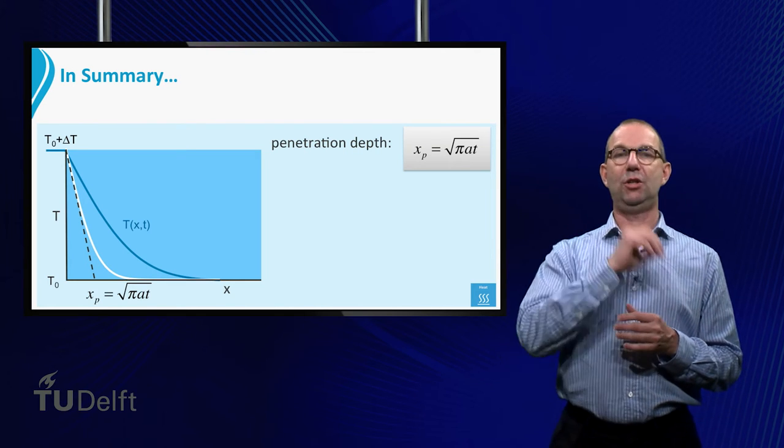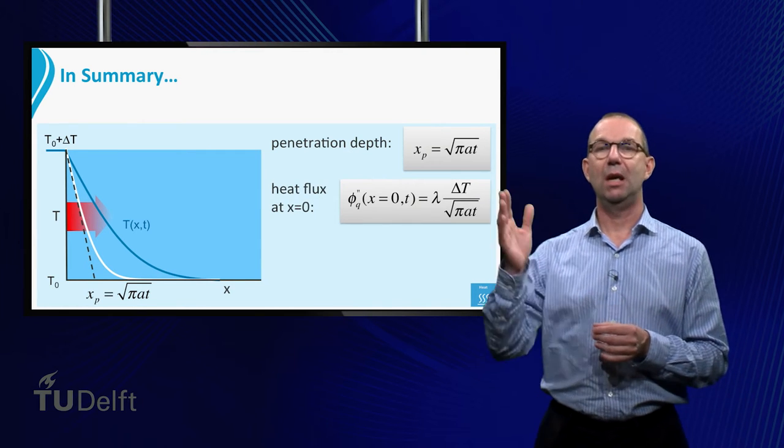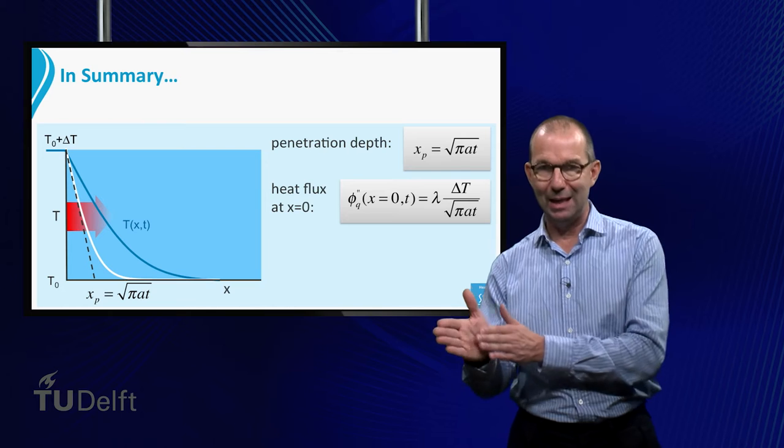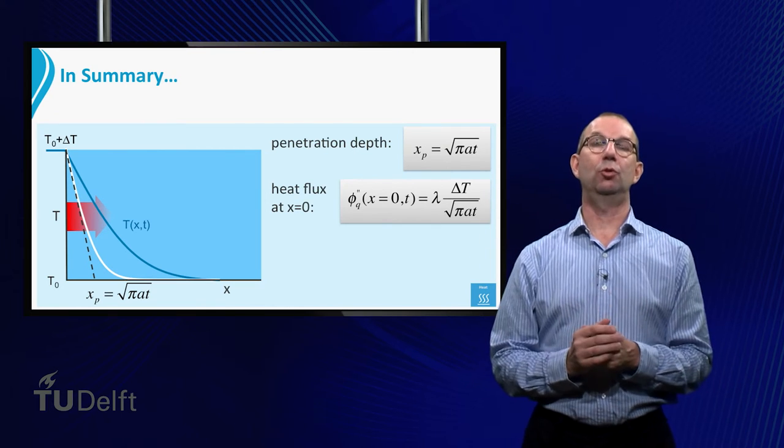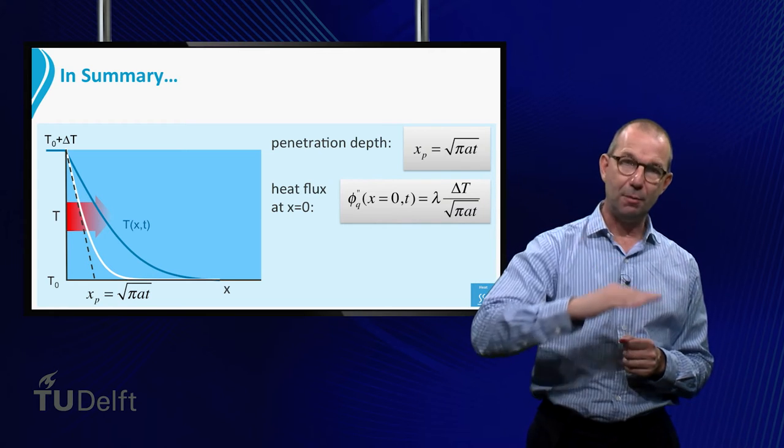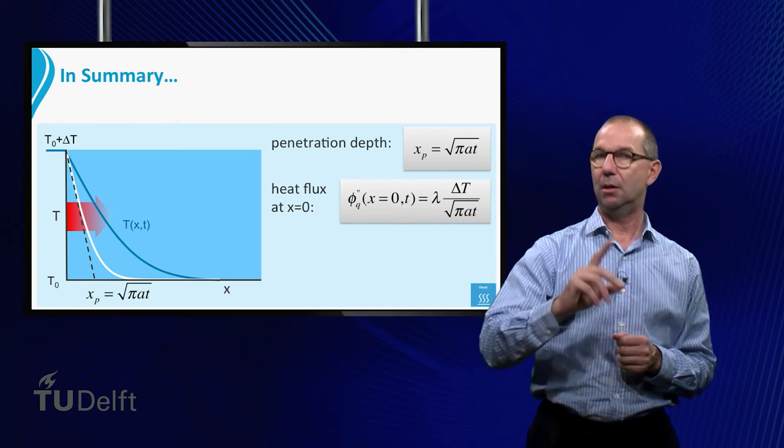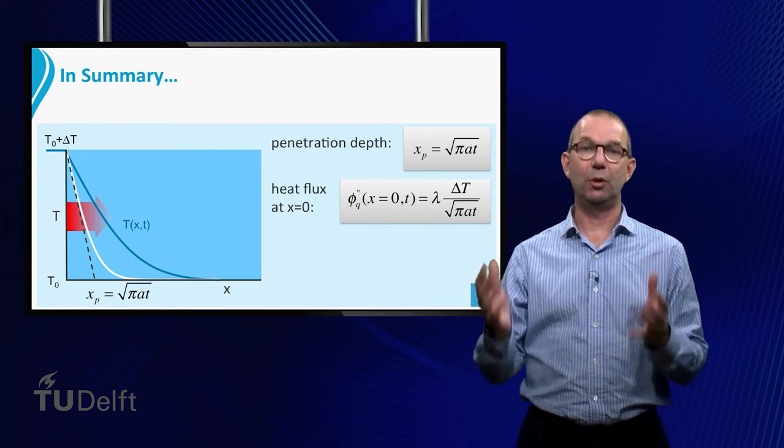From the definition of the penetration depth, we can also quickly calculate the heat flux into the plate that is flowing in at the left side. It is exactly equal to the ratio of lambda times the driving force divided by the penetration depth. This is not a surprise, as the heat flow is via conduction and thus via Fourier's law.